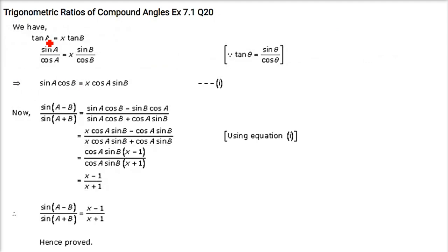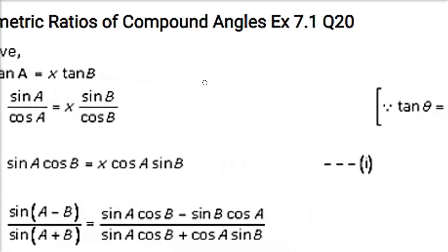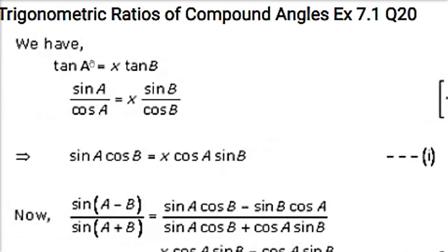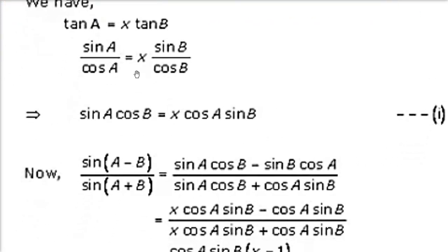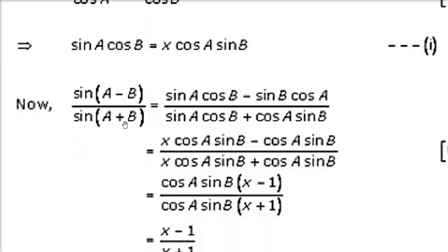tan(a) is equal to x·tan(b). Now we have to prove that sin(a − b)/sin(a + b) is equal to (x − 1)/(x + 1). We know tan = sin/cos, so write tan(a) = sin(a)/cos(a) and tan(b) = sin(b)/cos(b), with x already there. Take cross multiplication: sin(a)·cos(b) and cos(a)·sin(b). Now sin(a − b) and sin(a + b) — this is what we have to prove.